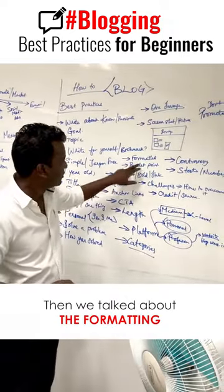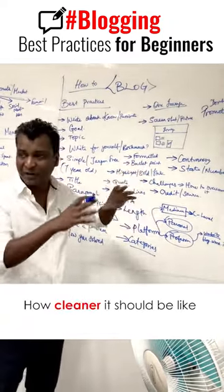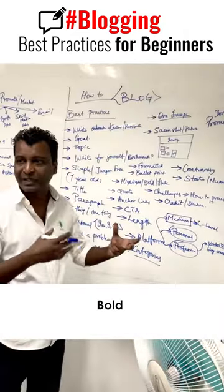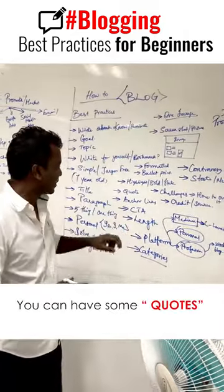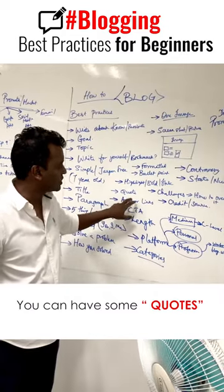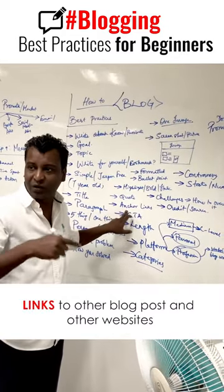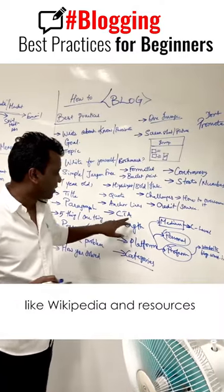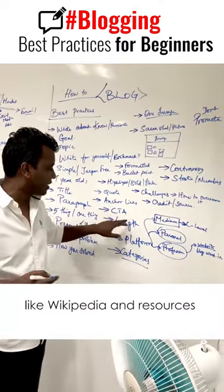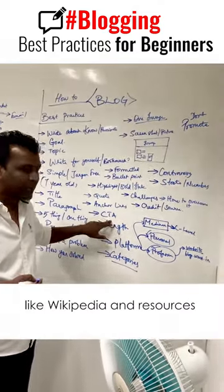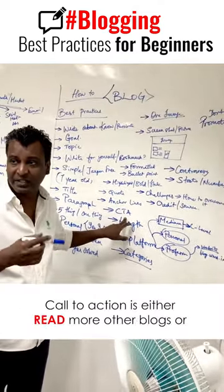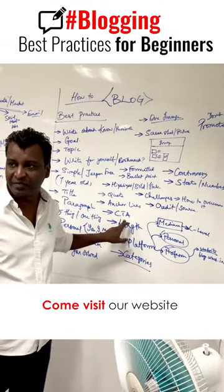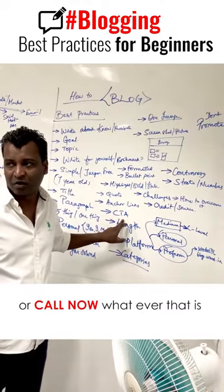Formatting should be clean — use bullet points, bold, italic, and highlighting. You can have quotes and links to other blog posts and websites like Wikipedia and other resources. Always have a call to action: either 'read more of the blog,' 'come visit our website,' or 'call now' — whatever is appropriate.